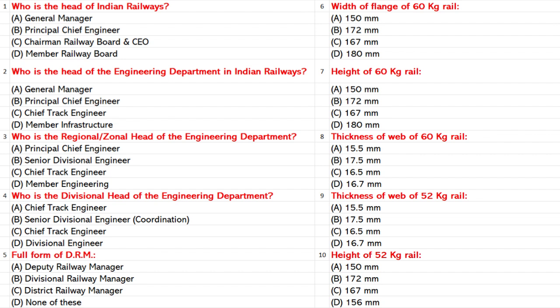Thickness of Web of 52 kg rail: A. 15.5 mm. B. 17.5 mm. C. 16.5 mm. D. 16.7 mm. Answer: A. 15.5 mm.